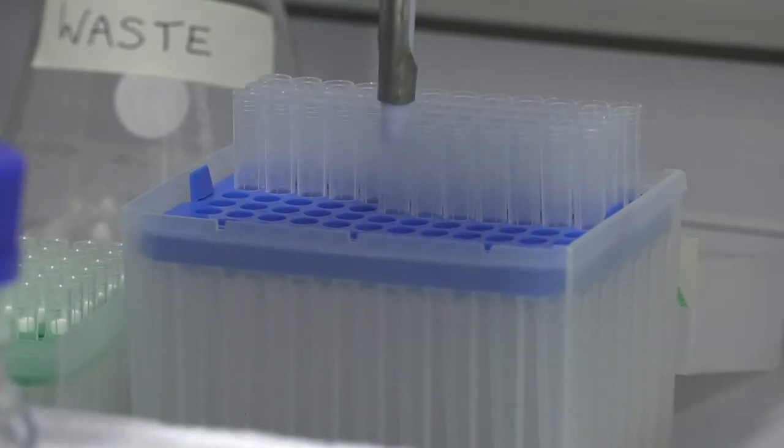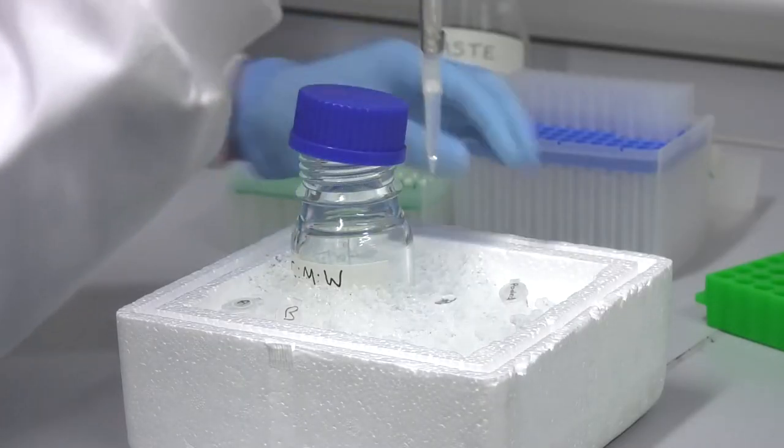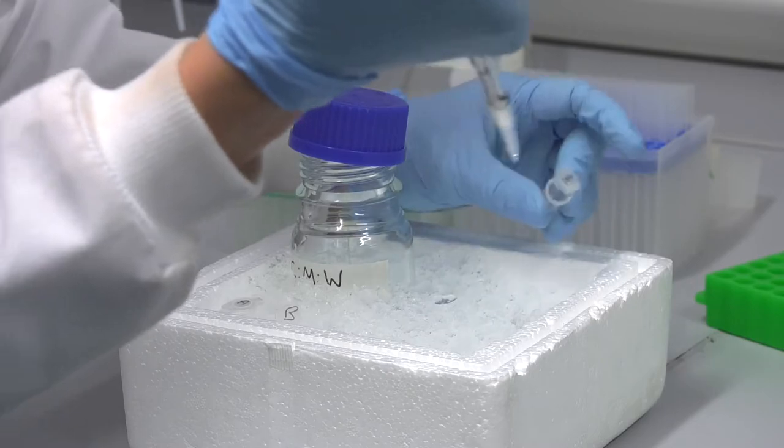Step 3. Add 1 milliliter of extraction solvent to your samples. For the pooled sample, add solvent in a 1 to 40 ratio.